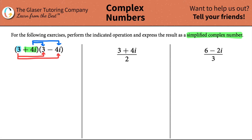So 3 times 3 is 9 — that's my first term. Then 3 times negative 4i: 3 times 4 is 12, so that's negative 12i. Now we got to be fair — positive 4i wants to be multiplied by 3, so 4 times 3 is 12, giving us positive 12i. And then positive 4i multiplied by negative 4i: 4 times 4 is 16, so that's minus 16, and multiplying i times i gives us i squared.